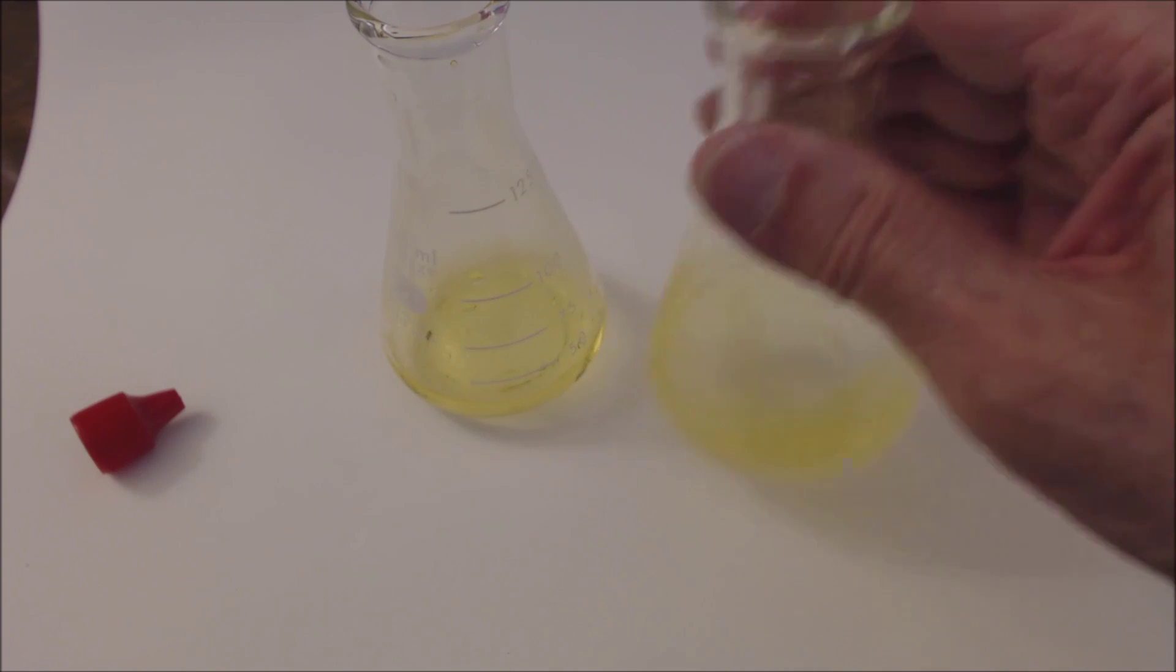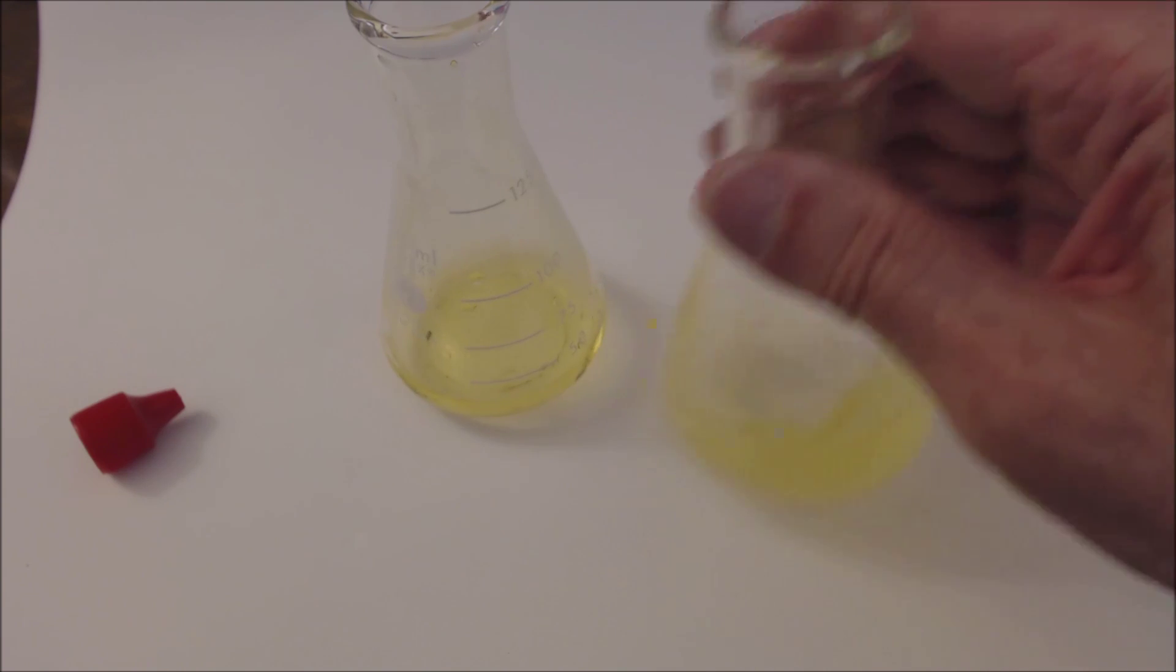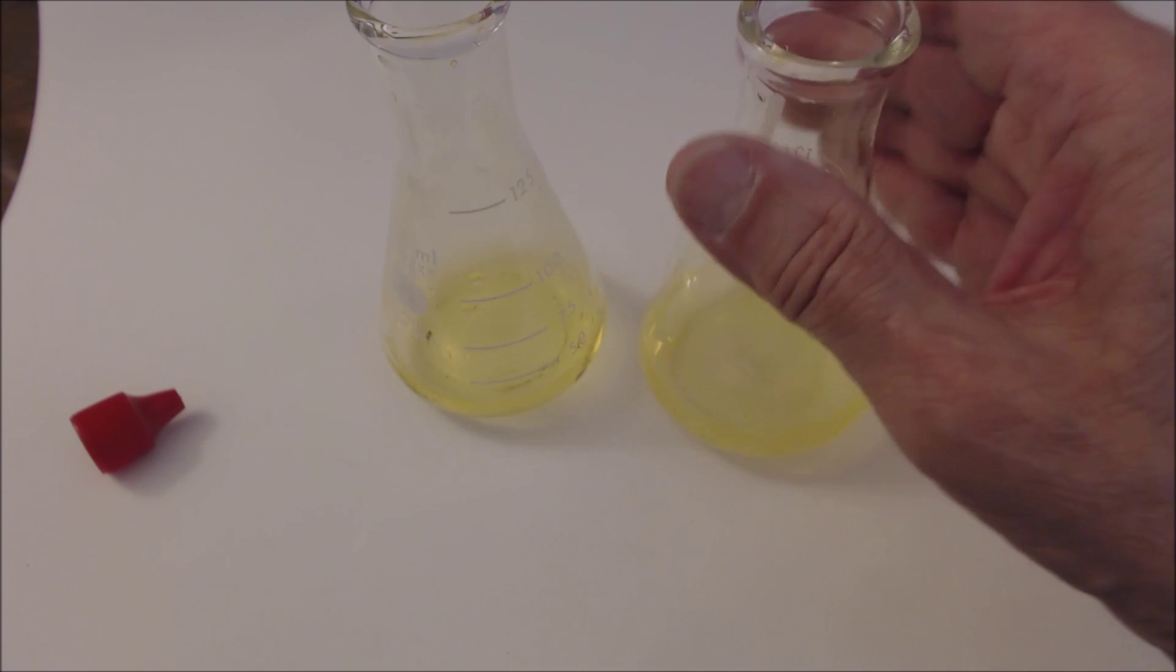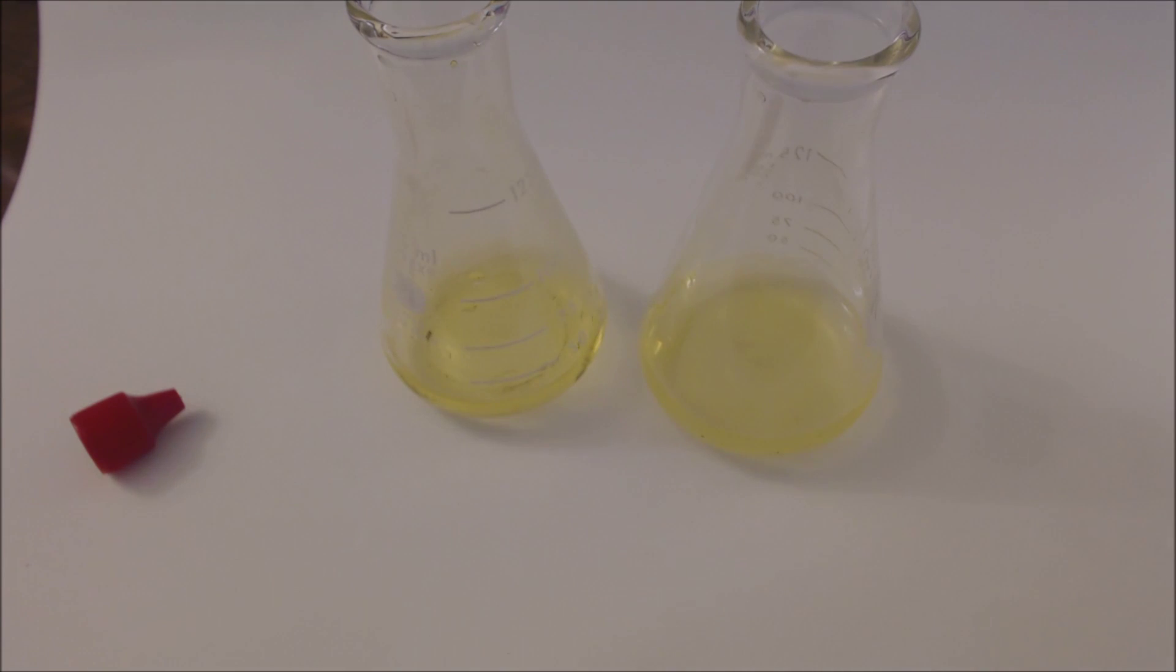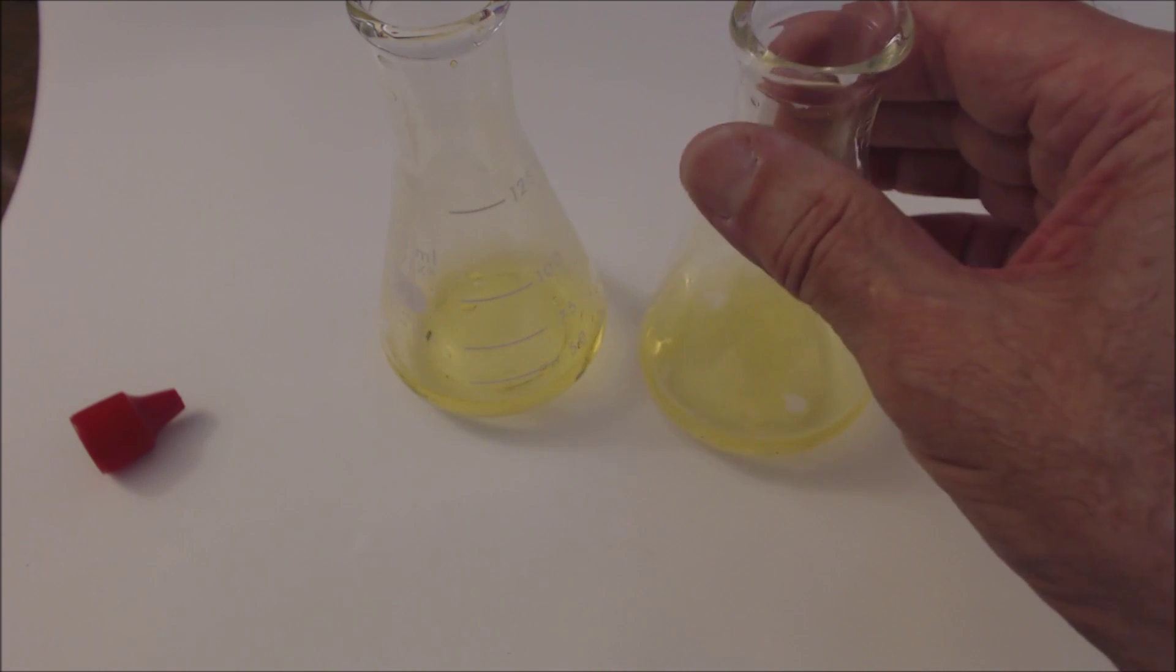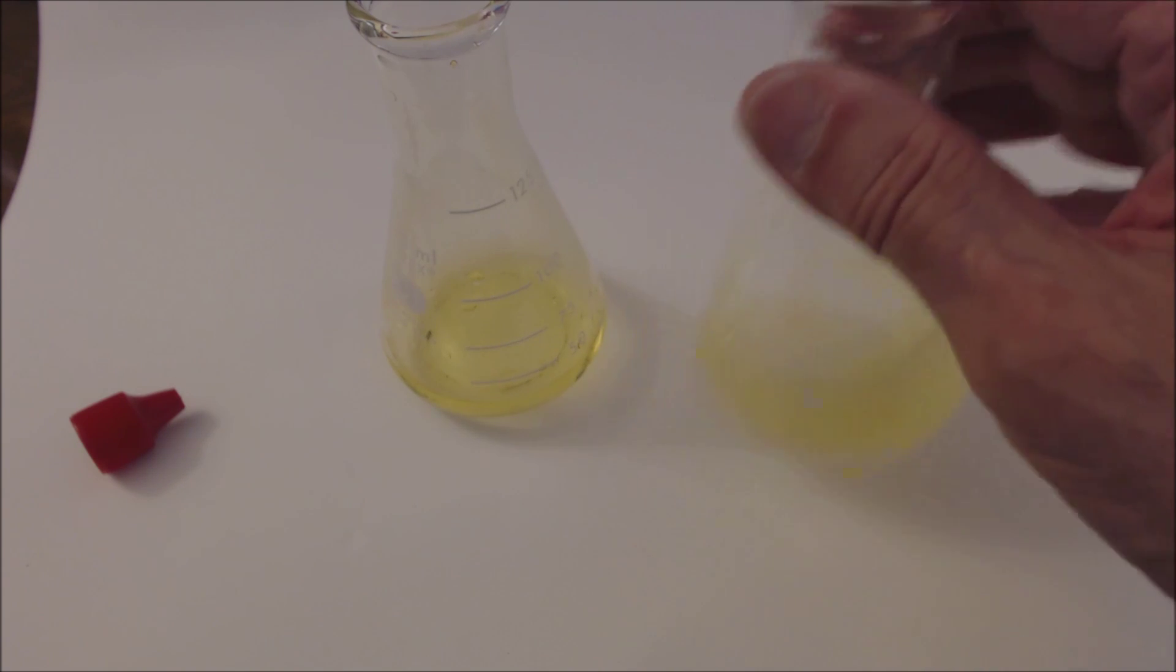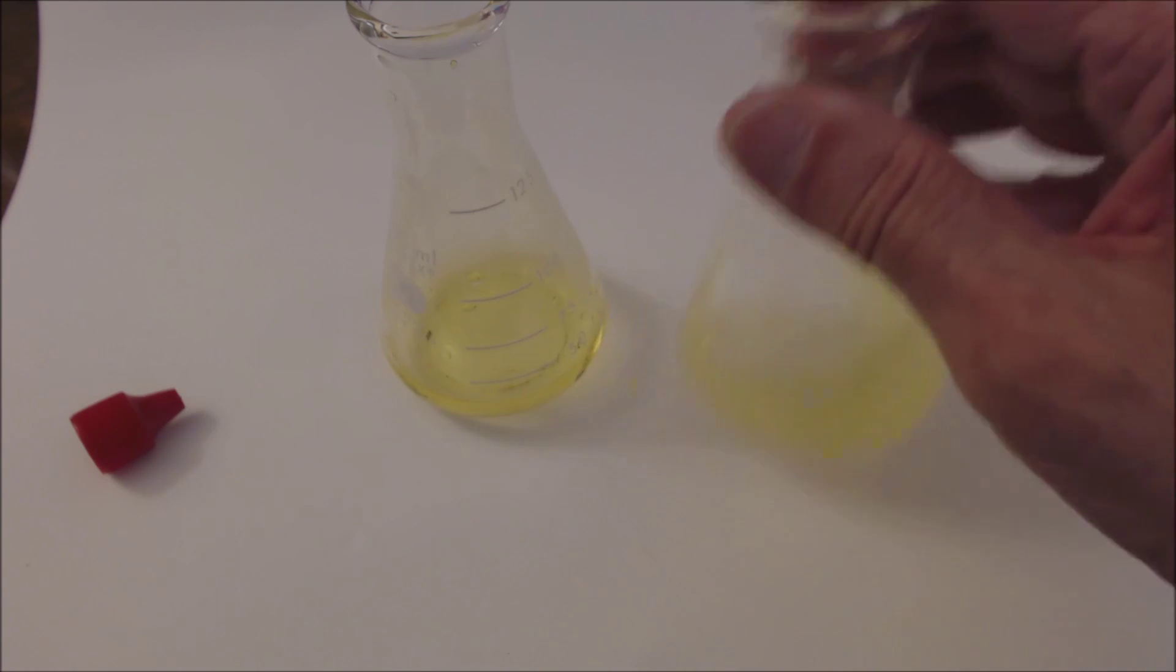If you're patient and swirl it, it clears up. It has a little turbidity. This is really a saturated solution of magnesium hydroxide. Very little of it dissolves in pure water. It forms like a suspension.